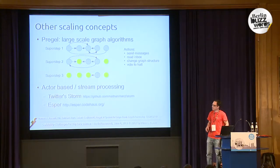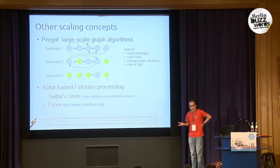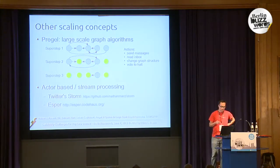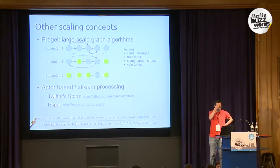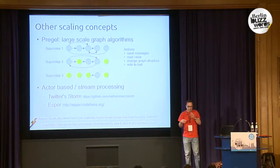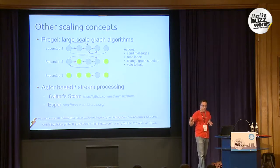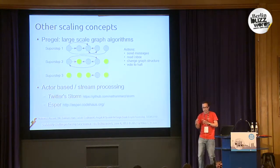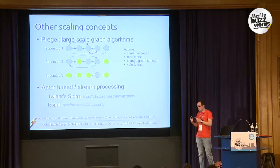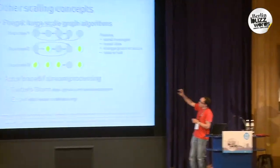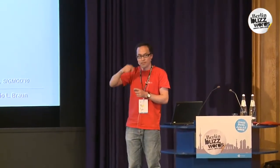MapReduce is of course only one thing. There are other scaling concepts — for example, Pregel, which also has an Apache version now. It's for large-scale graph algorithms: you store your data distributed on a cluster and compute typical graph algorithms on the cluster. Again, it's not that you can do anything — just like in MapReduce, you have a special computation model. The algorithm works in steps, and on each node in your graph you have an inbox; in each step nodes can send messages to each other.